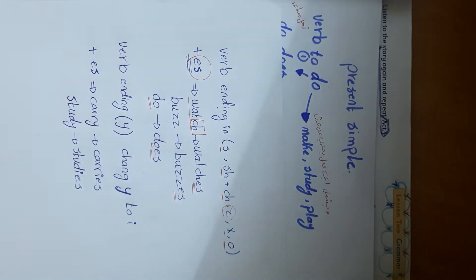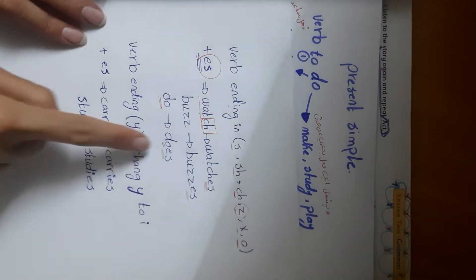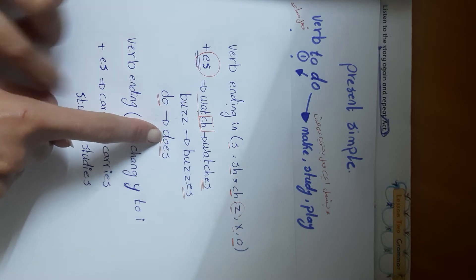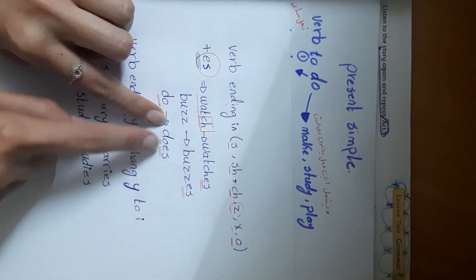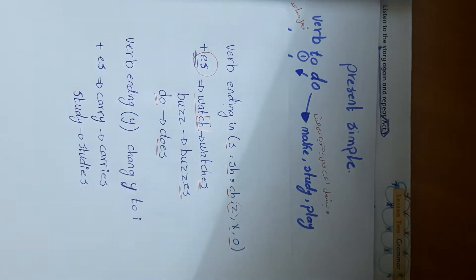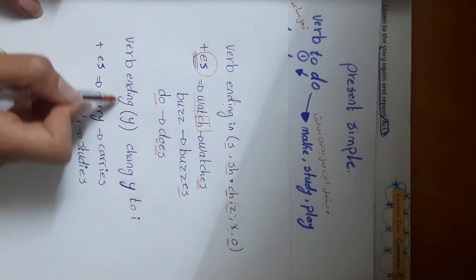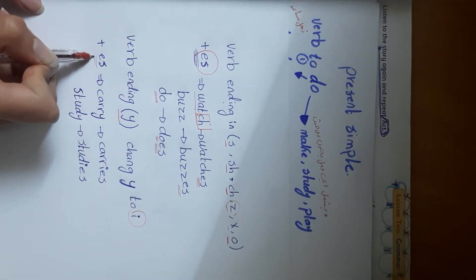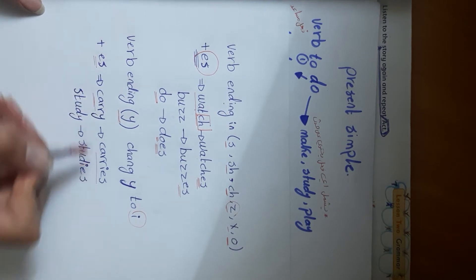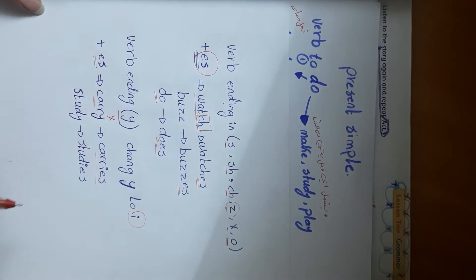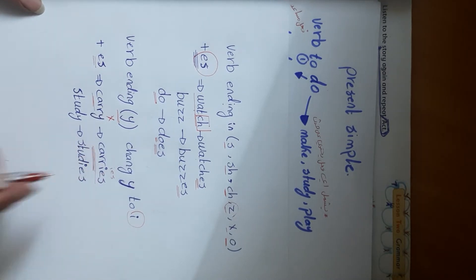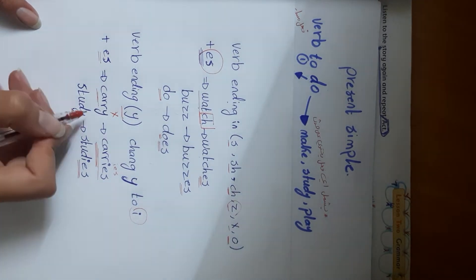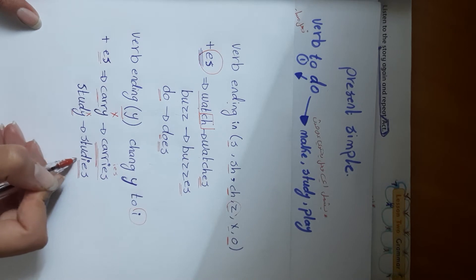That is why we use 'does' — because 'do' ends in 'o,' we add -es. And for verbs ending in '-y,' we change the 'y' to 'i' and add '-es.' For example: 'carry' becomes 'carries,' 'study' becomes 'studies' — we drop the Y and add I-E-S.